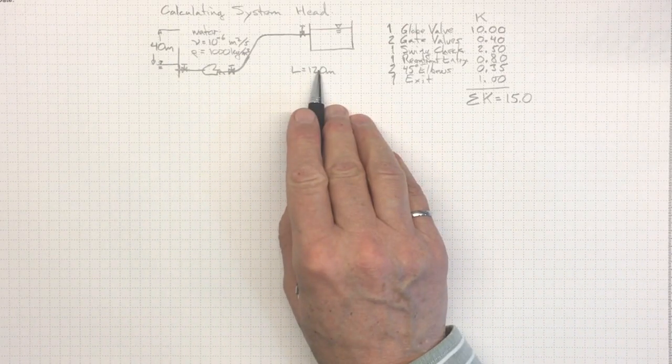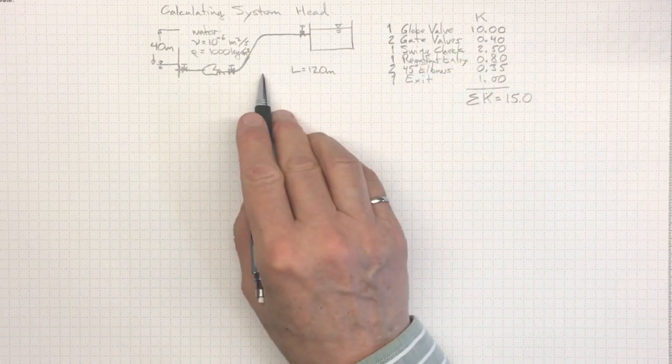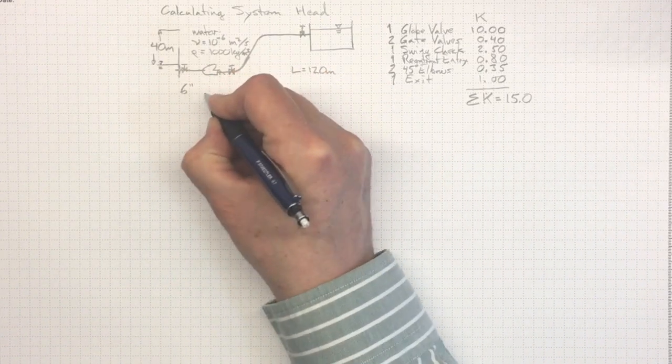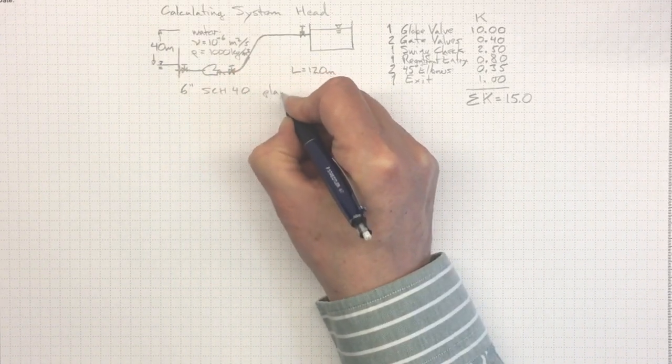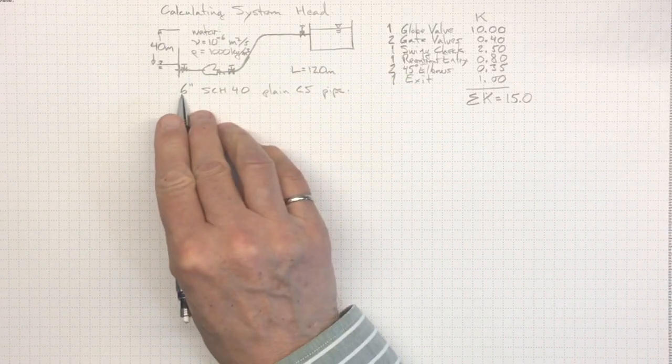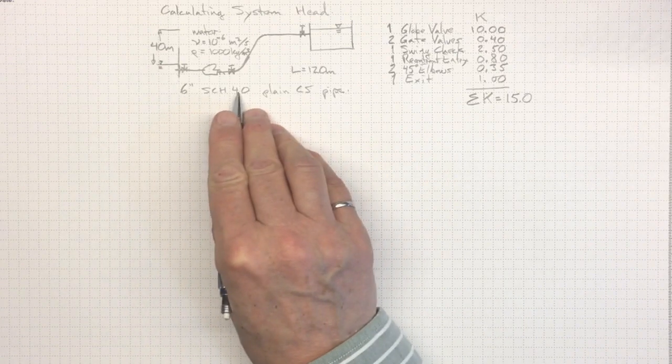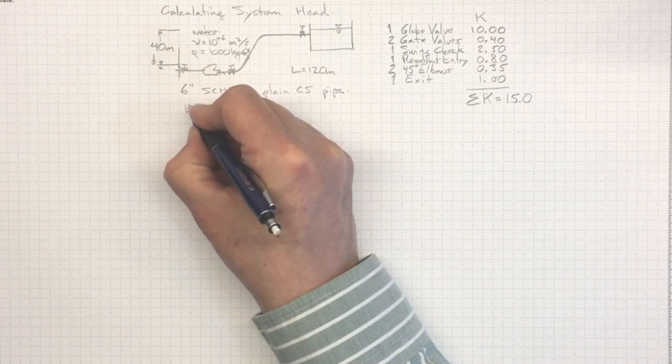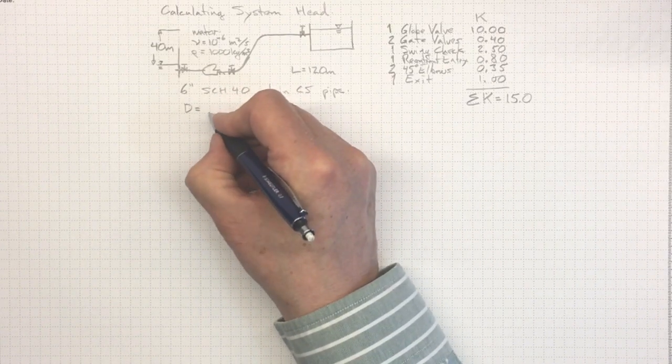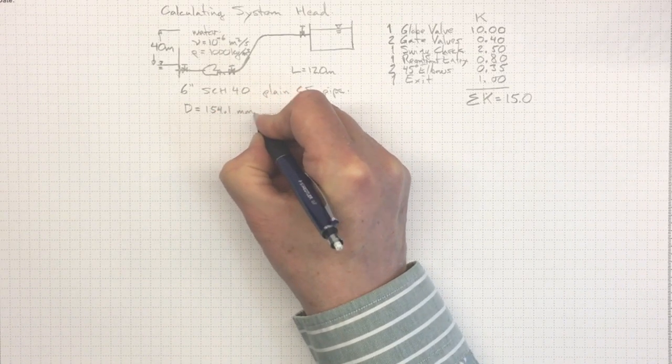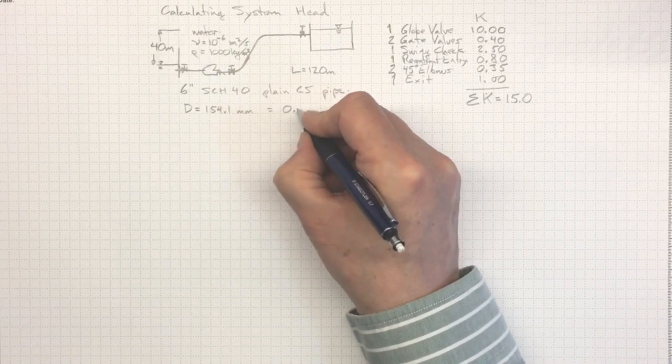So, we know how long this pipe is. We know what the K factors are. We need to know how big a pipe it is. Well, let's say it's a medium-sized pipe. It's a 6-inch Schedule 40 plain carbon steel pipe. Now, to know what that inside diameter actually is, we'll have to look it up in a table for Schedule 40 pipe. And I looked it up, and I found out that the inside diameter of a Schedule 40 pipe is 154.1 millimeters. Or, being careful to keep everything in consistent units, 0.1541 meters.